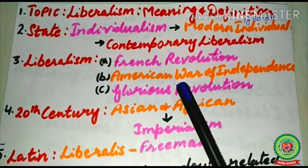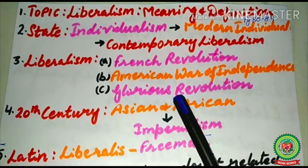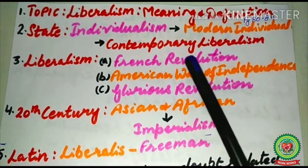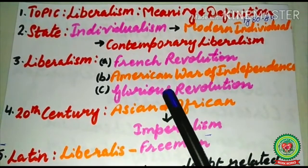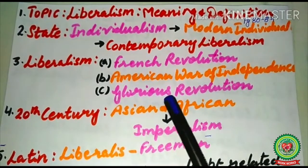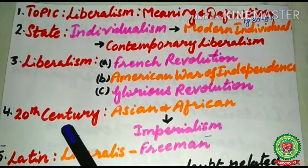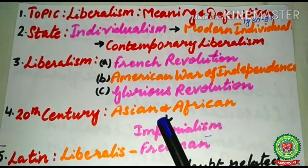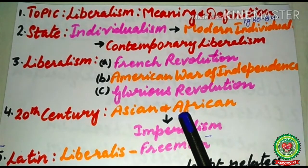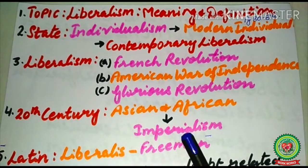In England, liberalism assumed the status of a national ideology in the Glorious Revolution in the 18th century. You have done the French Revolution, American War of Independence, and Glorious Revolution in detail in your junior classes. In the 20th century, many Asian and African nations worked to overthrow imperialism and gain independent status. These liberation movements got strengthened from the ideologies of liberalism and socialism.